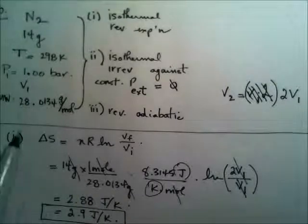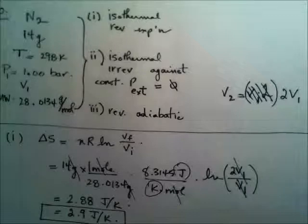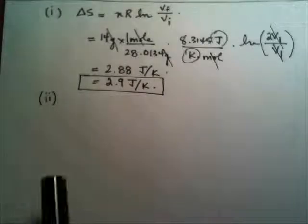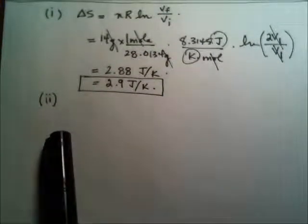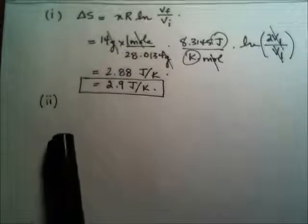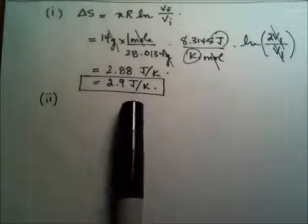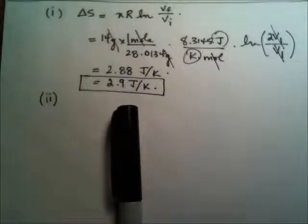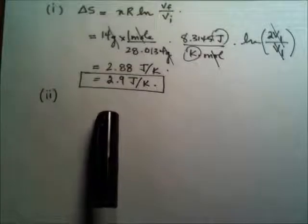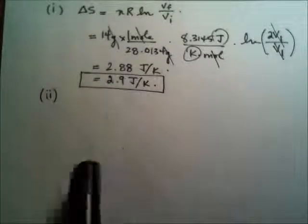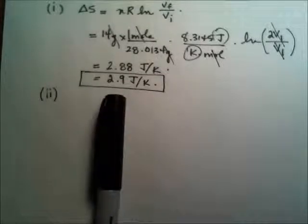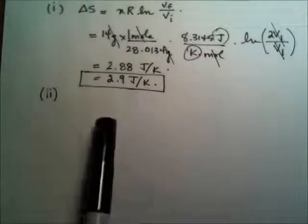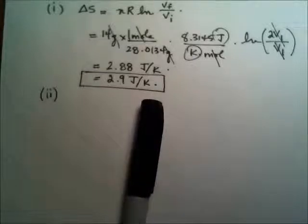All right, small amount of nitrogen, small expansion, not a high temperature, so very small entropy change. Just before we move on to the second path, number 2, I'll just remind you that the question is asking you to determine not only delta S for the system, which is what this is, but also for the surroundings. And because this is path 1, an isothermal reversible expansion, specifically reversible, you can write that delta S for the surroundings is equal and opposite, and therefore in this case a minus 2.9 joule per kelvin. And finally, the delta S total would be their sum, and that would be 0.